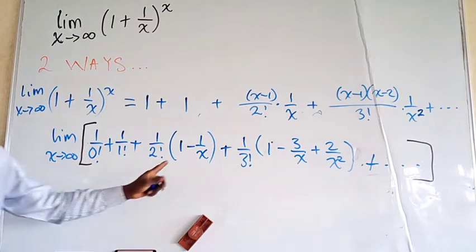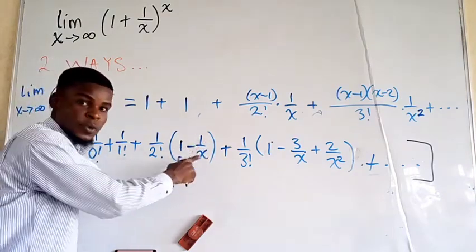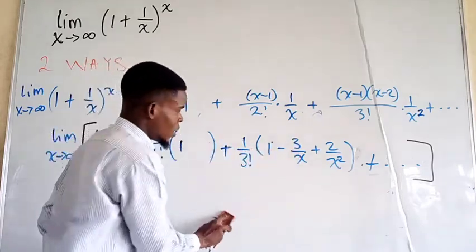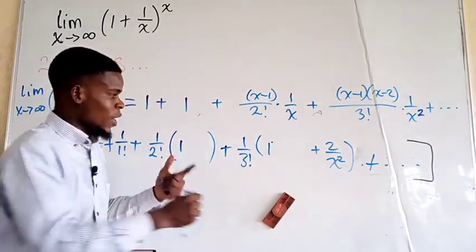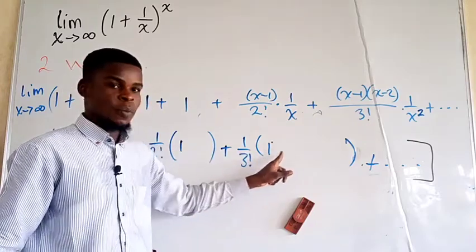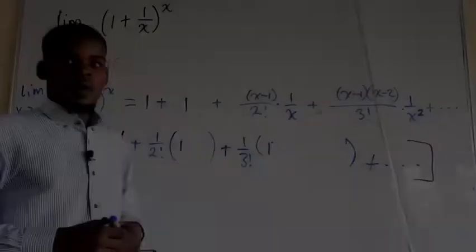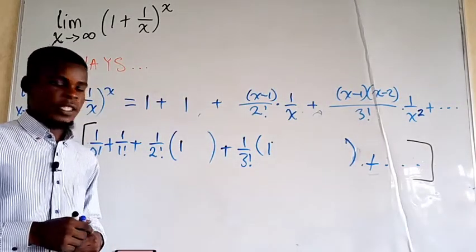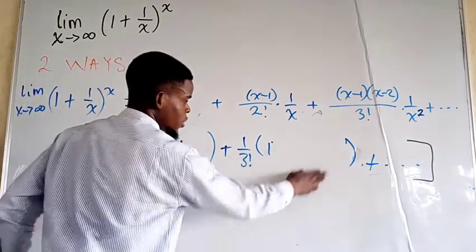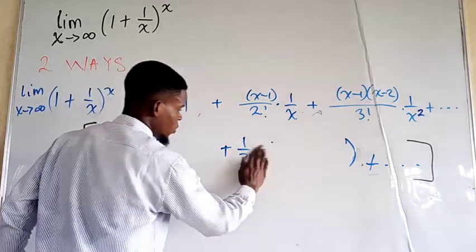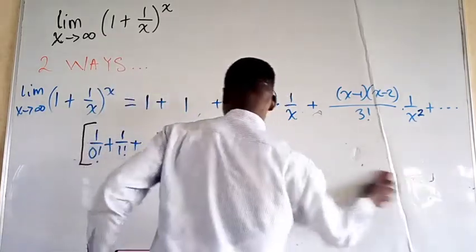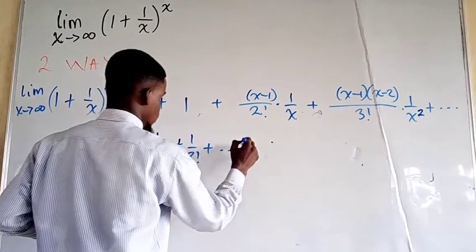As x tends to infinity, 1/x tends to 0, so each bracket reduces: (1 − 1/x) → 1, (1 − 3/x + 2/x²) → 1, and all similar brackets also tend to 1. So multiplying through, every bracket simply contributes 1, leaving us with 1/0! + 1/1! + 1/2! + 1/3! + 1/4! + …